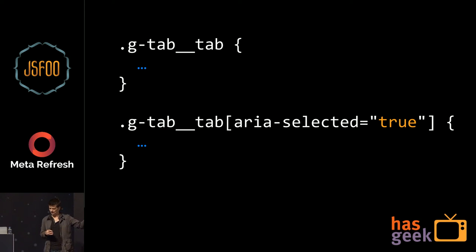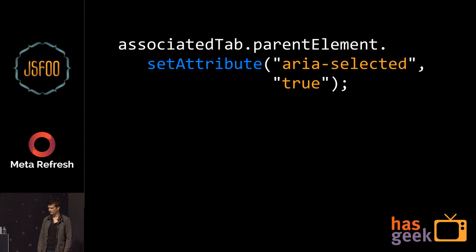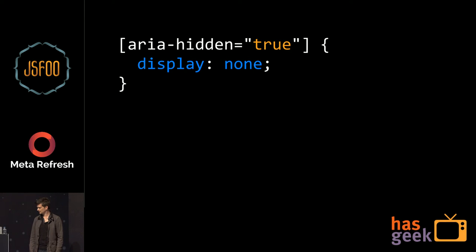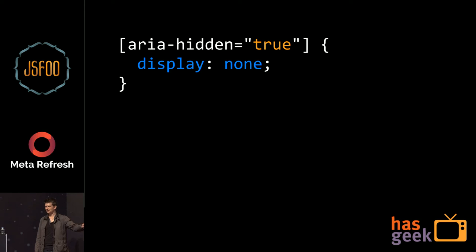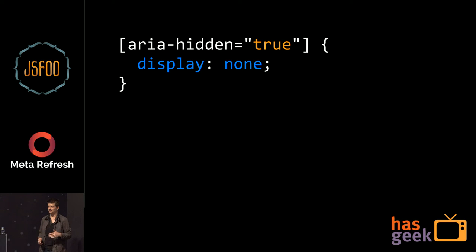Strictly speaking this is no longer BEM — my approach is to take the essence of BEM and extend it to ease the class congestion that can happen. This is actually better because it makes a lot more sense, and your JavaScript is more readable too. You can see I'm setting the selected state. When I first got into this I got really overzealous and decided to write global ARIA selectors — writing 'aria-hidden: true / display: none' globally — but when you want to animate something you can't just hide it immediately, so that didn't work.